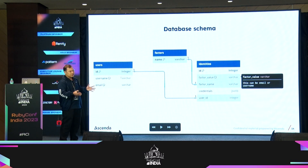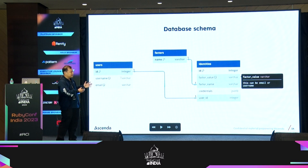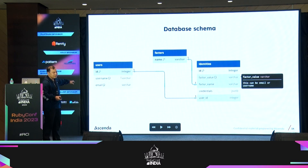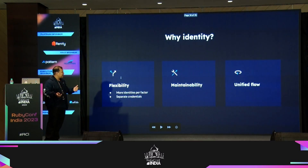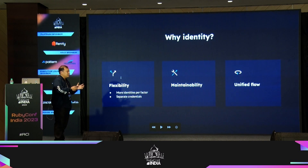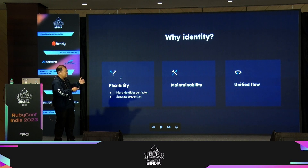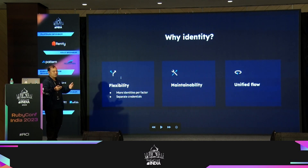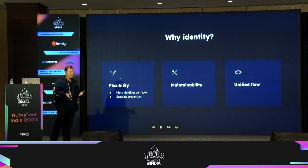In order to support multiple factors, we need to revise the original schema. We will need a factor table, and from there we have identities. The identity has a factor name and a factor value. Factor name is basically the factor we want to support — like authenticator app, email, or SMS. Factor value holds the actual detail — like the username or the email address. Why do we need that identity table? Basically to be more flexible — for example, if you want to allow two emails to log in for a single user, having a separate identity table makes that much easier.